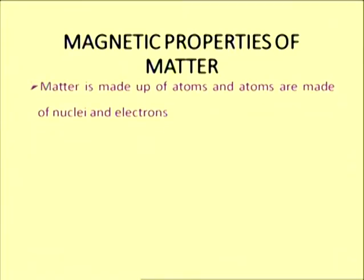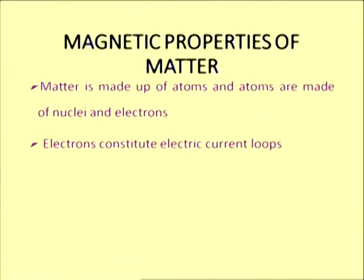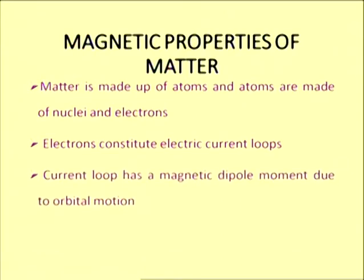As we all know, matter is made up of atoms and atoms are made up of nuclei and electrons. The nucleus is at the center of the atom and the electrons are revolving around the nucleus in certain orbits known as Bohr orbits. Because these electrons are moving in definite orbits, they constitute electric current loops. Electrons moving in orbits of smaller radii correspond to tiny current loops, and because of these current loops they have got a magnetic dipole moment associated with them due to their orbital motion.